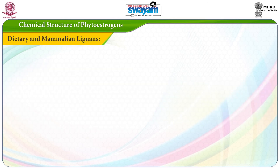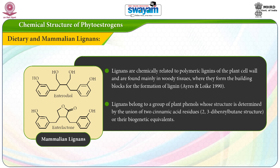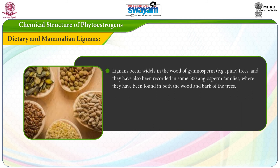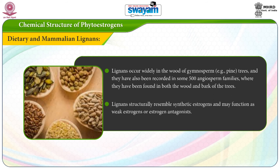The next class of phytoestrogens is dietary and mammalian lignans. Lignans are chemically related to polymeric lignins of the plant cell and are found mainly in woody tissues where they form the building blocks for the formation of lignin. Lignans belong to a group of plant phenols whose structure is determined by the union of two cinnamic acid residues with a 2,3-dibenzylbutane structure or their biogenetic equivalent. Lignans occur widely in the wood of gymnosperms, that is pine trees, and have also been recorded in some 500 angiosperm families where they have been found in both the wood and the bark of the trees. Lignans structurally resemble synthetic estrogen and may function as a weak estrogen or estrogen antagonist.